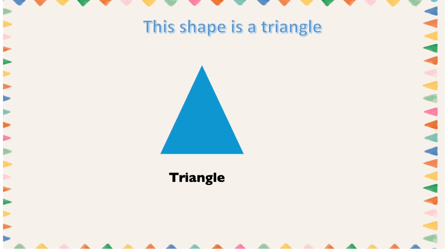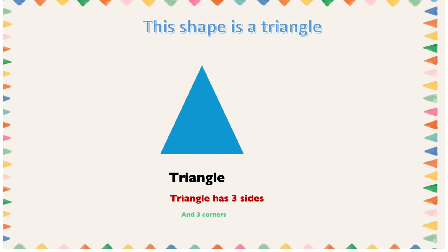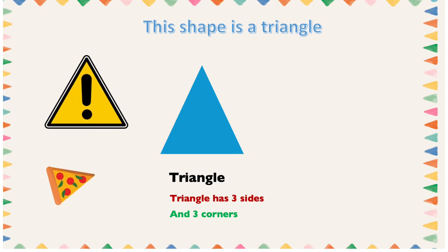This shape is a triangle. A triangle has three sides: one, two, three. It also has three corners: one, two, three. Let's look at objects that have a triangular shape — objects like a sign, a slice of pizza.